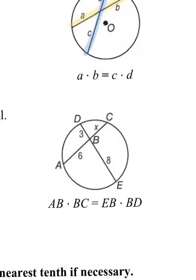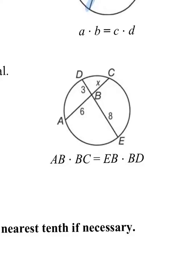There's a sample problem. We have AB. If I take these two segments, if I multiply AB is 6, BC is X, I'm going to set it equal to the other chord line segments. I have EB which is 8, and I'm going to multiply it by BD which is 3.